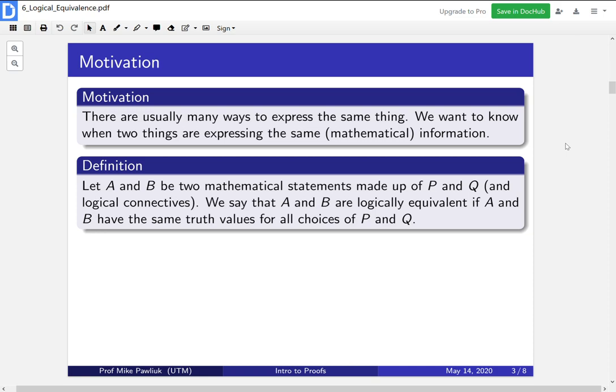Here's our formal definition. If A and B are two mathematical statements made up of P and Q statements and logical connectives like AND and OR, then we say that A and B are logically equivalent if A and B have the same truth values for all choices of P and Q.